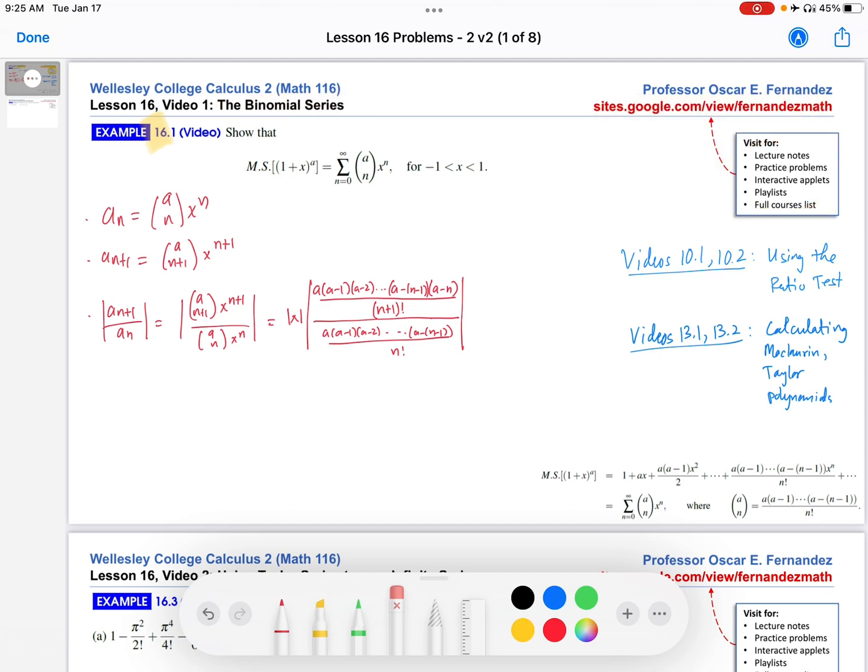So what does the example say? It asks us to show that the McLaurin series for 1 plus x to the a is this particular power series for negative 1 to 1. There's really two parts to this example. One of them is calculating the McLaurin series of this function to actually get what we call this entire series, the binomial series.